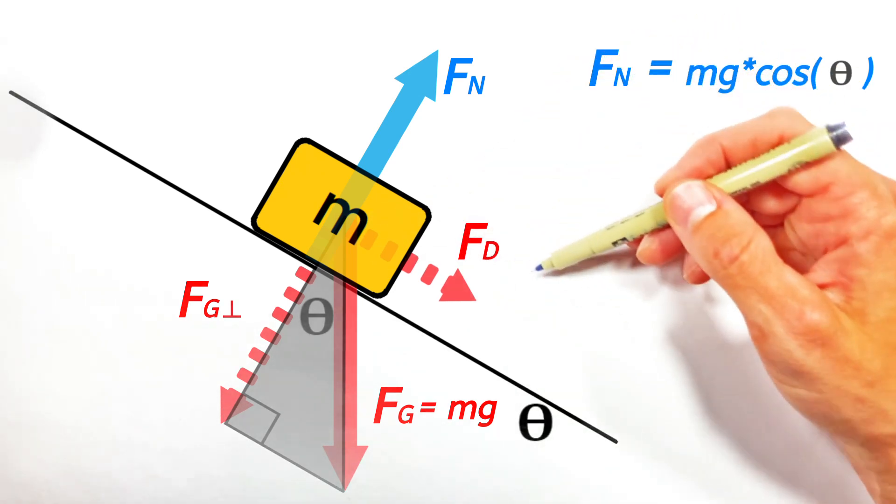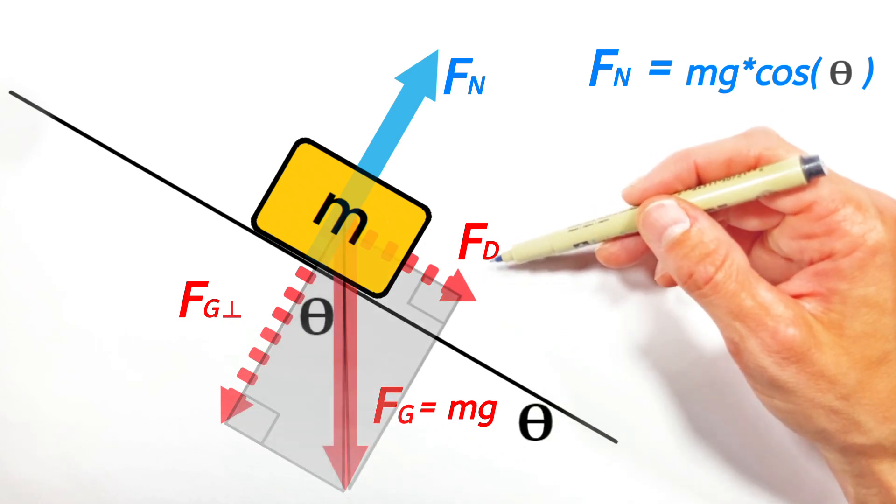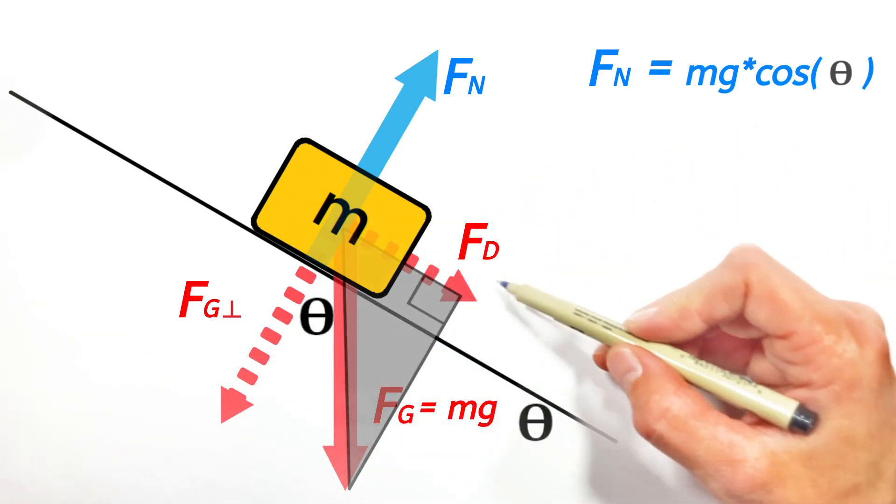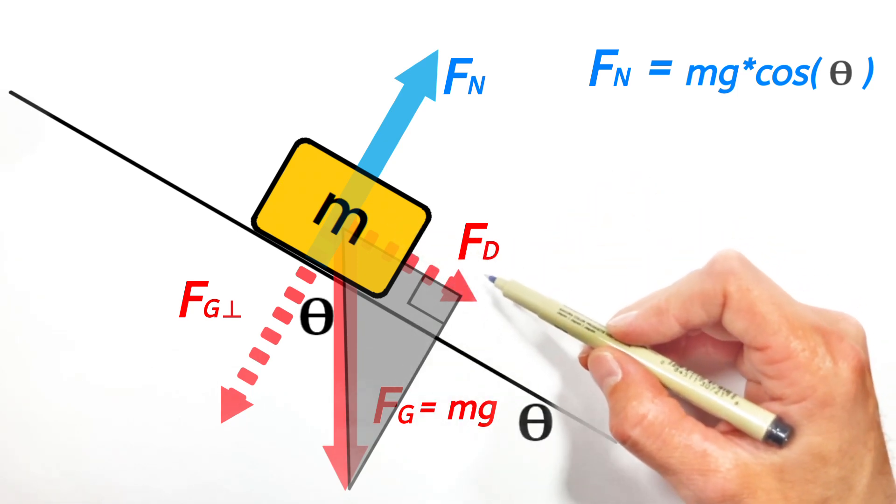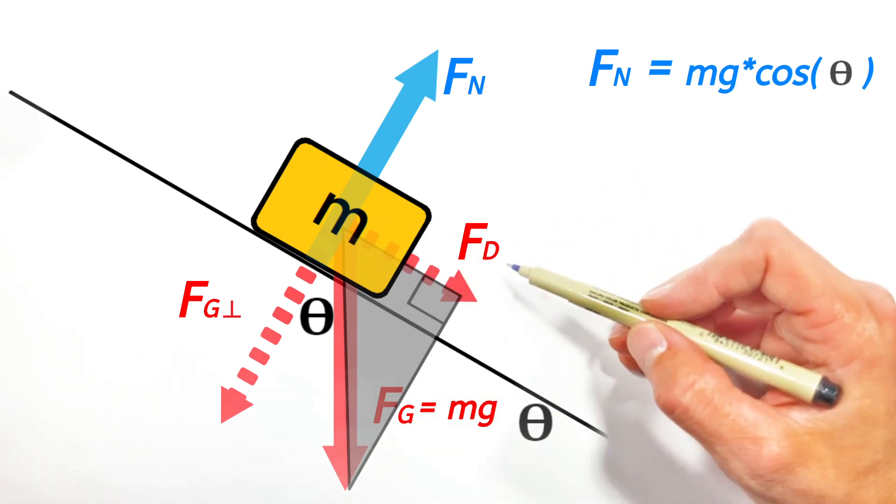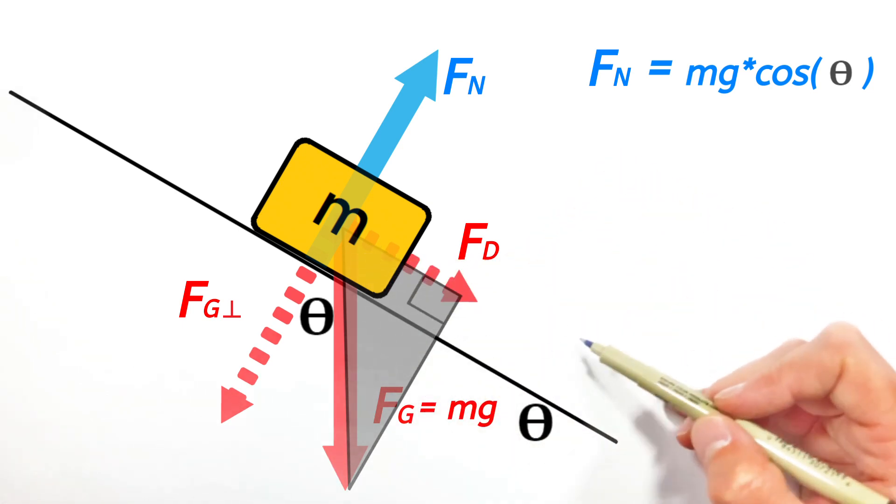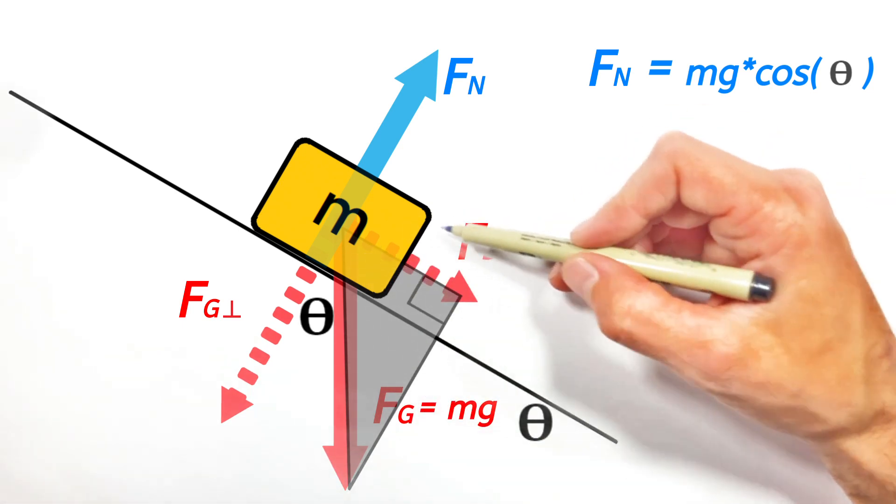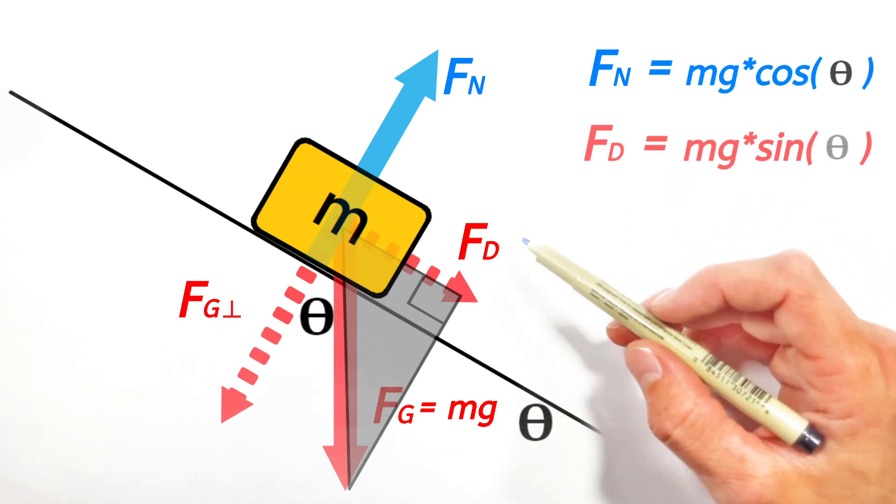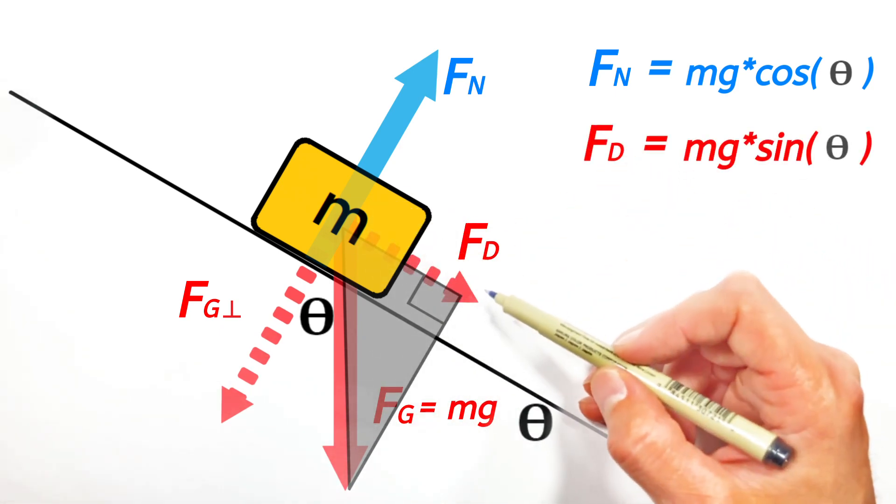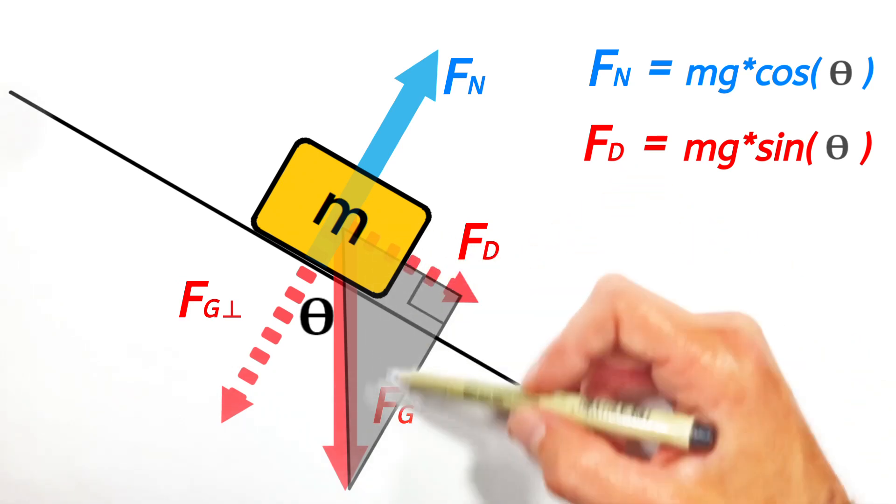And we have a similar situation with this force down the hill. Looking at this as the hypotenuse, and then this force down the hill as being the opposite side of this triangle, realize this angle and this angle are both equal to the angle of the hill. That means this force down the hill is, in fact, Mg sine theta, because it's the opposite side of this right triangle, where the hypotenuse is Mg.